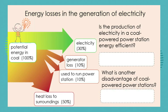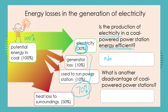So we have to ask: is the production of electricity in a coal-powered power station energy efficient? We're putting in a hundred percent and only getting out 30 percent useful energy — so no, it's not very efficient. In total, 70 percent is wasted energy.